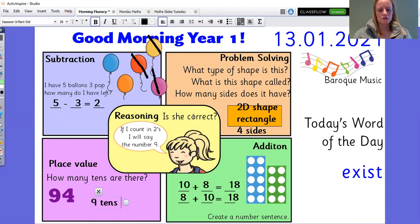Then reasoning. Is she correct? If I count in twos, I will say the number nine. So count with me. 2, 4, 6, 8, 10, 12, 14, 16, 18, 20.